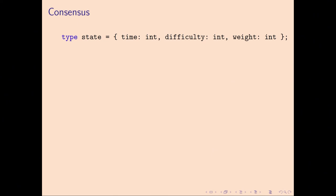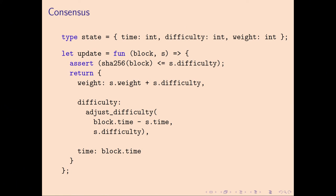Now let's talk about how consensus must work in this succinct setting. In proof of work, you have some state that you manage consensus with. You keep track of: what is the time, what is the current difficulty, and how weighty is the blockchain — how much hashing has been expended in producing it. The update function is really simple: you get a block and a state, you hash that block, check that it's below the difficulty threshold mandated in the state, and return an updated state. The weight is incremented by the difficulty of the block, the difficulty gets adjusted by some control system, and you update the timestamp with whatever the block producer said.